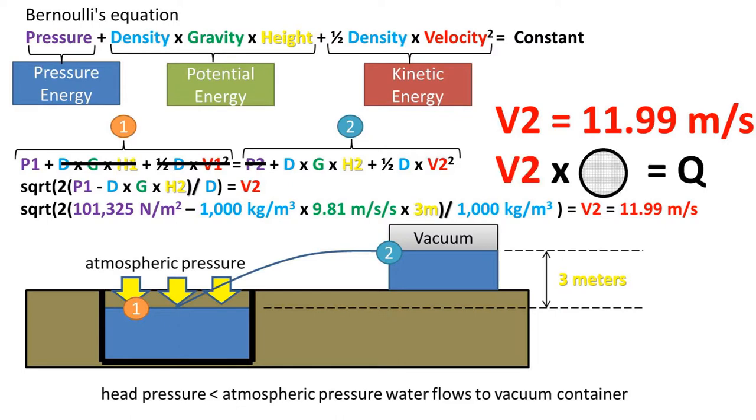If you wanted to get the flow rate, you could just multiply this times the cross-sectional area of the interior of the pipe.